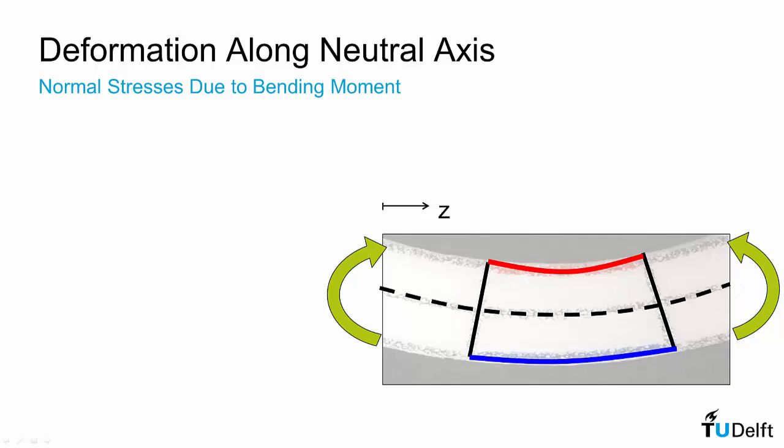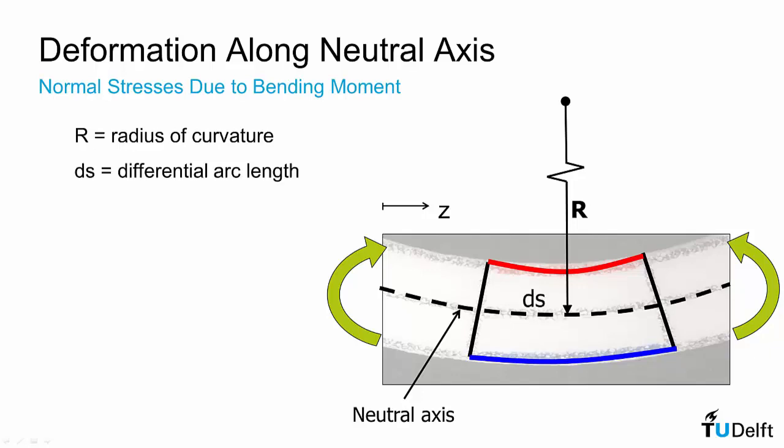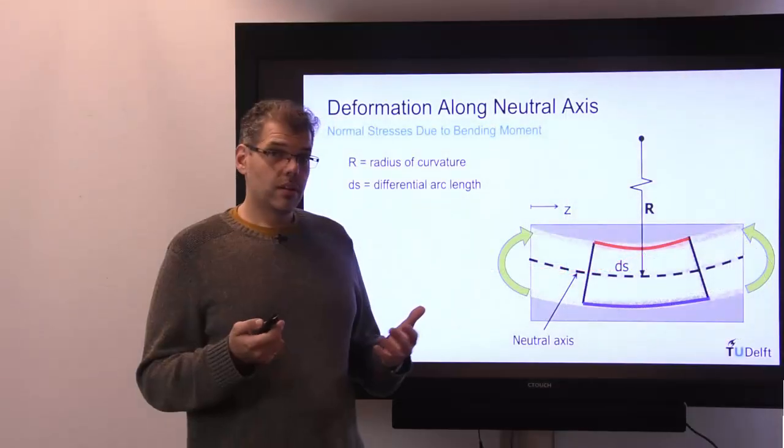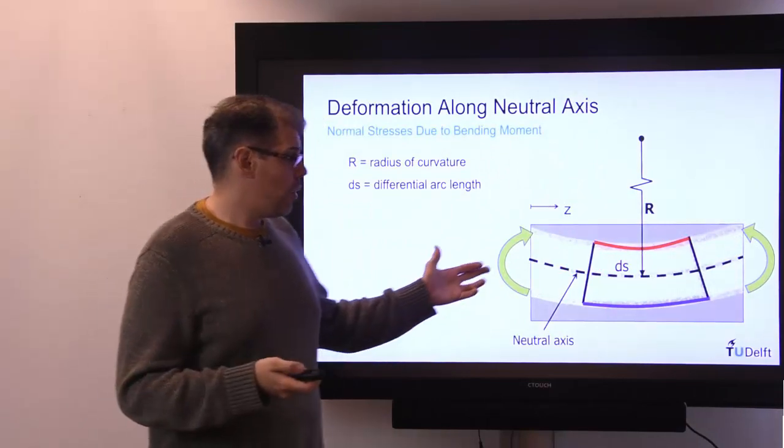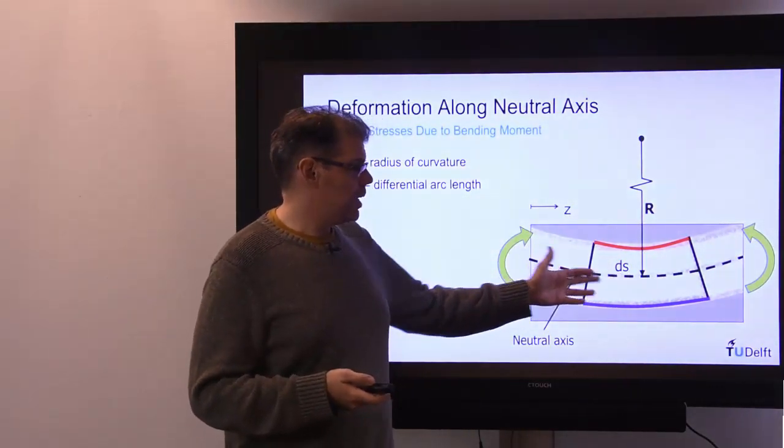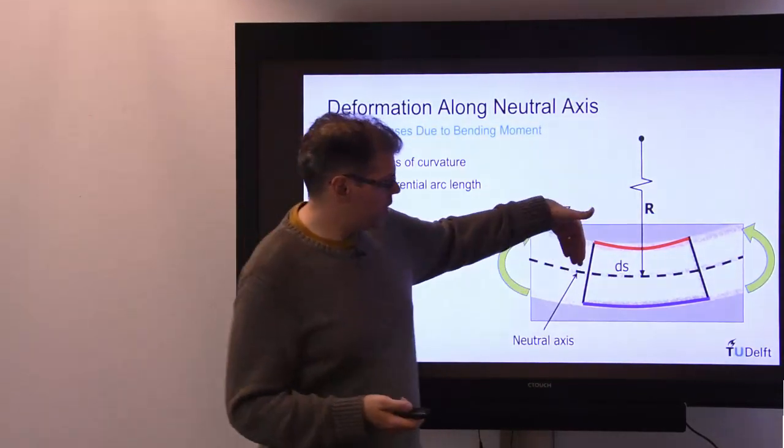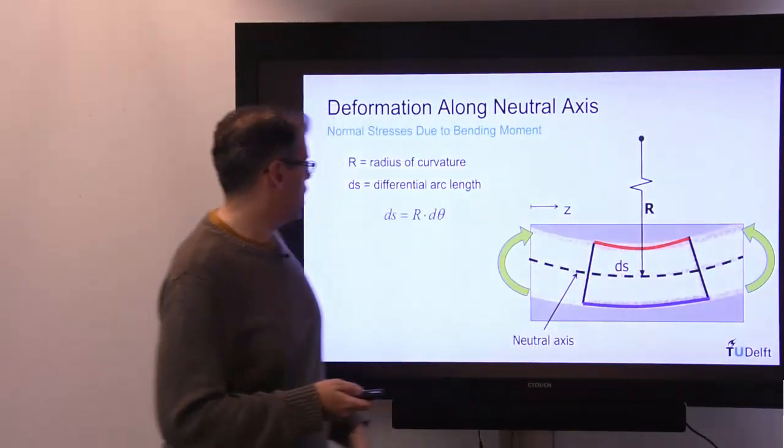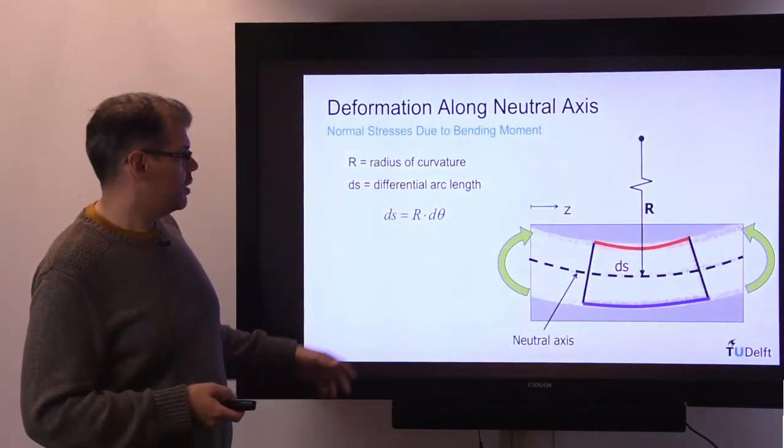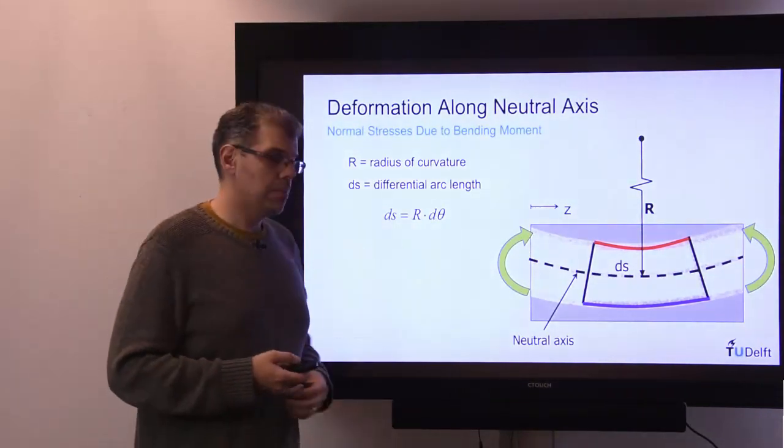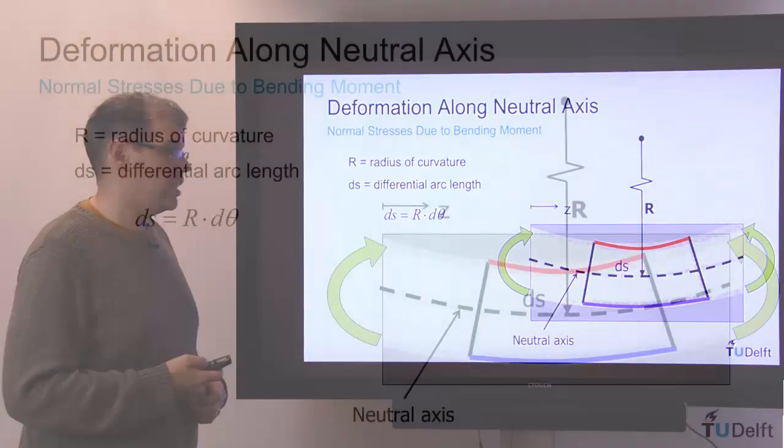We're going to start labeling a few things on this. First of all, we'll take the neutral axis and we'll measure our radius of curvature relative to that position. Then we have the arc length swept by that radius being ds. So as the radius sweeps through an angle which we'll call dθ, r dθ will sweep out an arc length of ds.